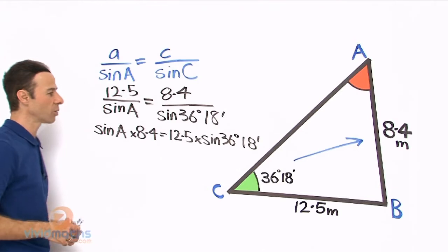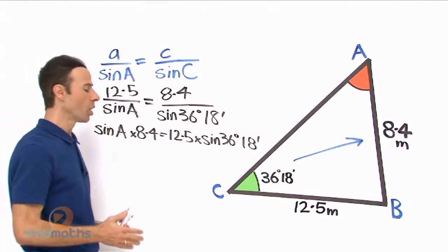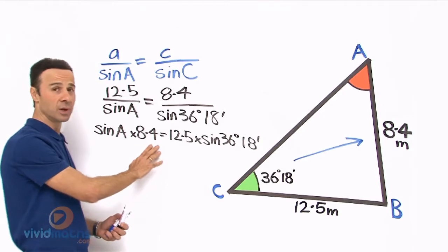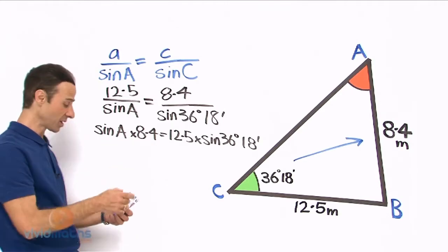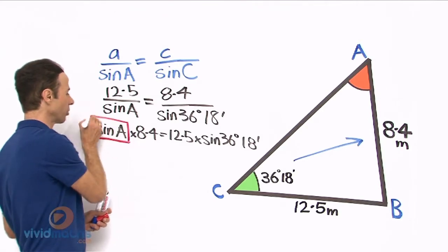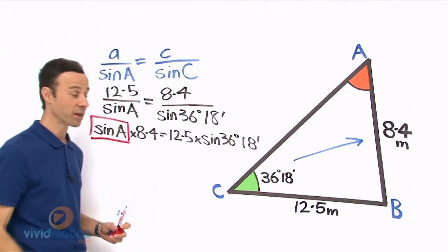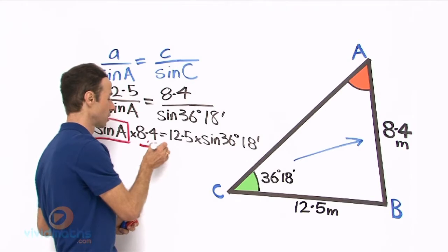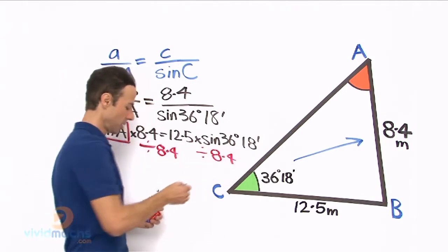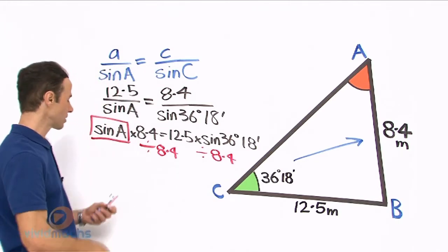What do we do now? Well, we got to divide both sides by what we want to eliminate. We want to eliminate this 8.4 so we can make the sine a the subject. So let me just mark out the subject. That is the subject that we want.